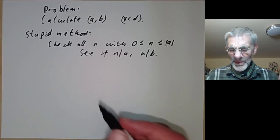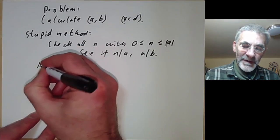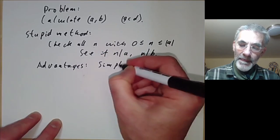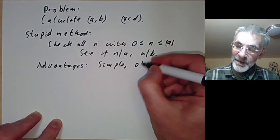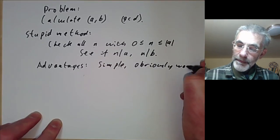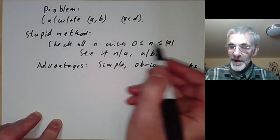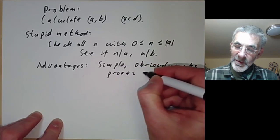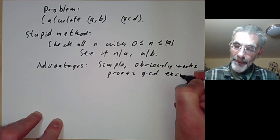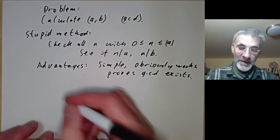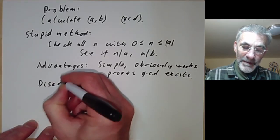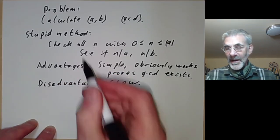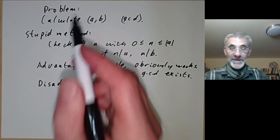This isn't quite as stupid as it sounds — it does have some advantages. First of all it's simple, it's easy to program, and it obviously works because you just check a finite number of integers. In particular, it proves the greatest common divisor exists. However, it has one obvious big disadvantage: it's pretty slow, because if a is quite large it's going to take ages to check all integers.